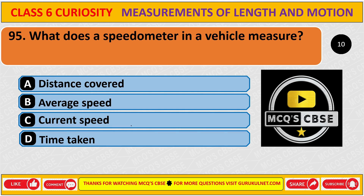What does a speedometer in a vehicle measure? The correct answer is C, current speed.